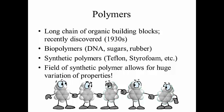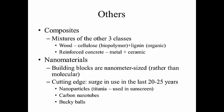The fourth class is composites, which are mixtures of two or more materials from the other classes. Wood, for example, is cellulose (a biopolymer) mixed with lignin (an organic molecule under ceramic classification). Reinforced concrete is a mix of metal and ceramic. Bullet-proof vests have ceramics and metals embedded together. All of these are called composites.